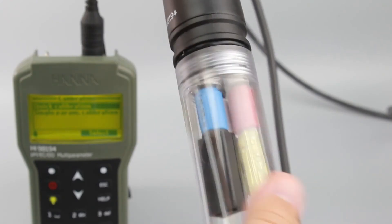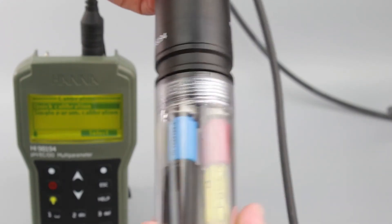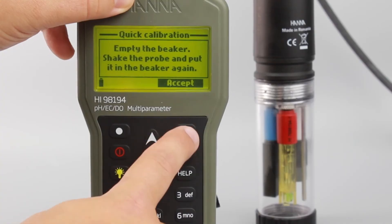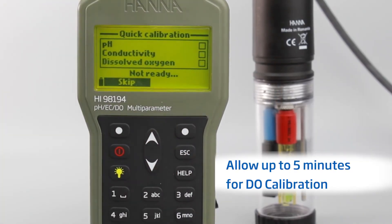No droplets should remain on the DO sensor tip. Screw the empty calibration beaker back onto the probe body. Press Accept, and then press Confirm to finish calibration.